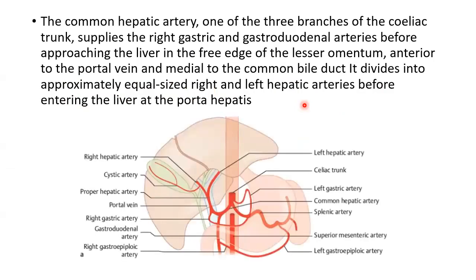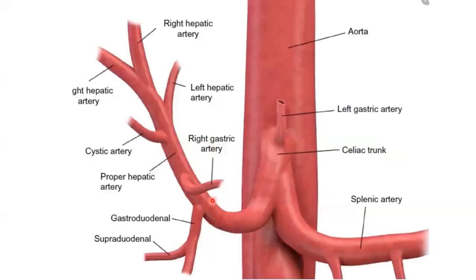The common hepatic artery arises from the celiac trunk. It supplies the right gastric and gastroduodenal arteries before approaching the liver in the free edge of the lesser omentum, anterior to the portal vein and medial to the common hepatic duct. It divides into approximately equal-sized right and left hepatic arteries before entering the liver at the porta hepatis.